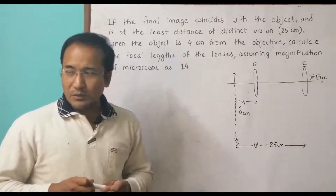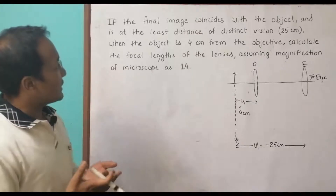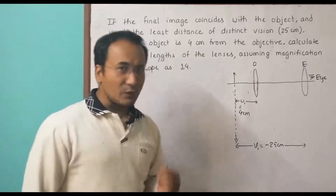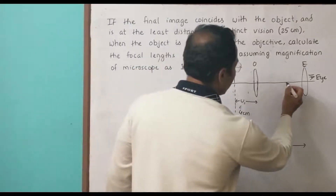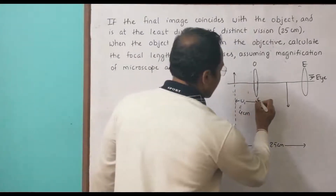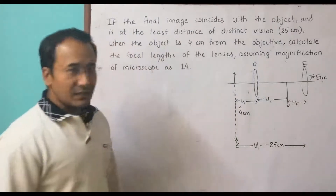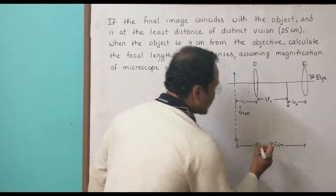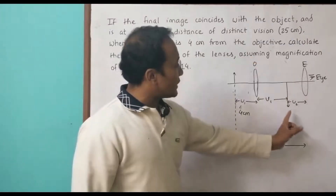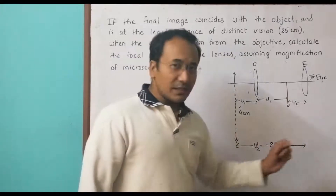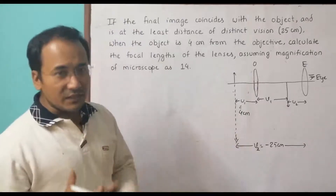In many problems we are given the focal lengths and asked for magnifications, but here they have given the magnification and object positions and are asking for focal lengths — so it's a reverse problem. The object forms a magnified real image, and we label the distances: U1 and V1 for the objective lens, U2 and V2 for the eyepiece lens. The minus sign on V2 is used because it is a virtual image — the image is not physically there but we are made to see it.